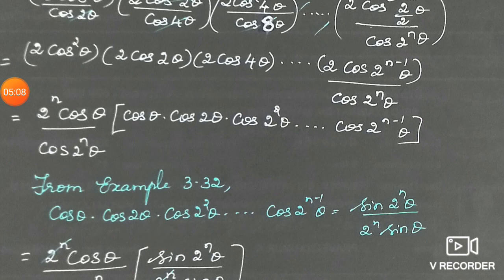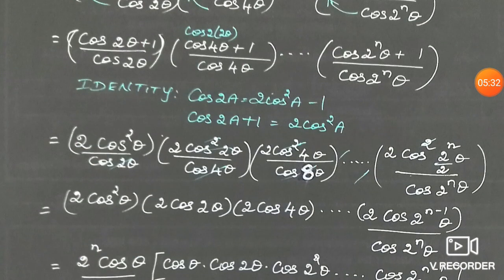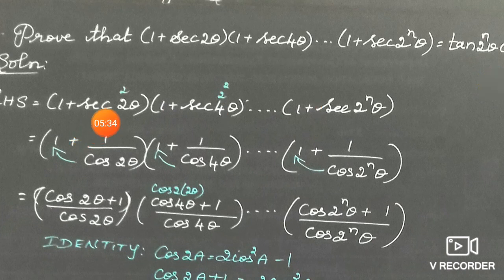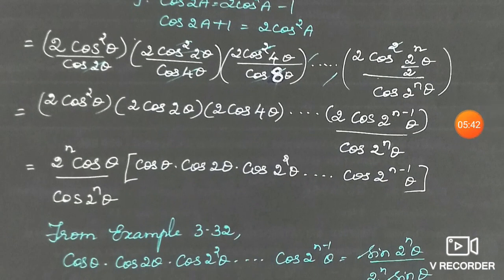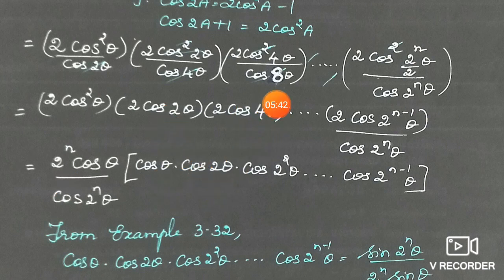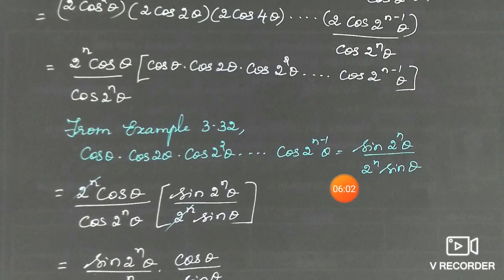So we can write 2cosθ · cos2θ · cos4θ · ... · cos(2ⁿ⁻¹θ) in the numerator, and cos(2ⁿθ) in the denominator, multiplied together with the factors of 2. The 2ⁿ in numerator and 2ⁿ in denominator cancel. Applying the product formula cosθ·cos2θ·...·cos(2ⁿ⁻¹θ) = sin(2ⁿθ)/(2ⁿ sinθ) and substituting.